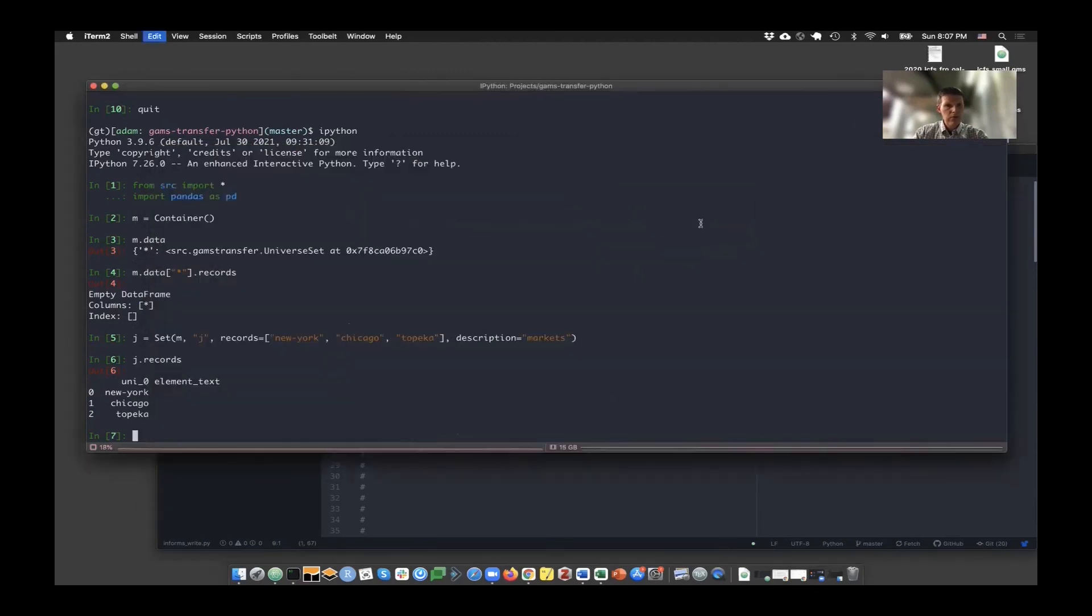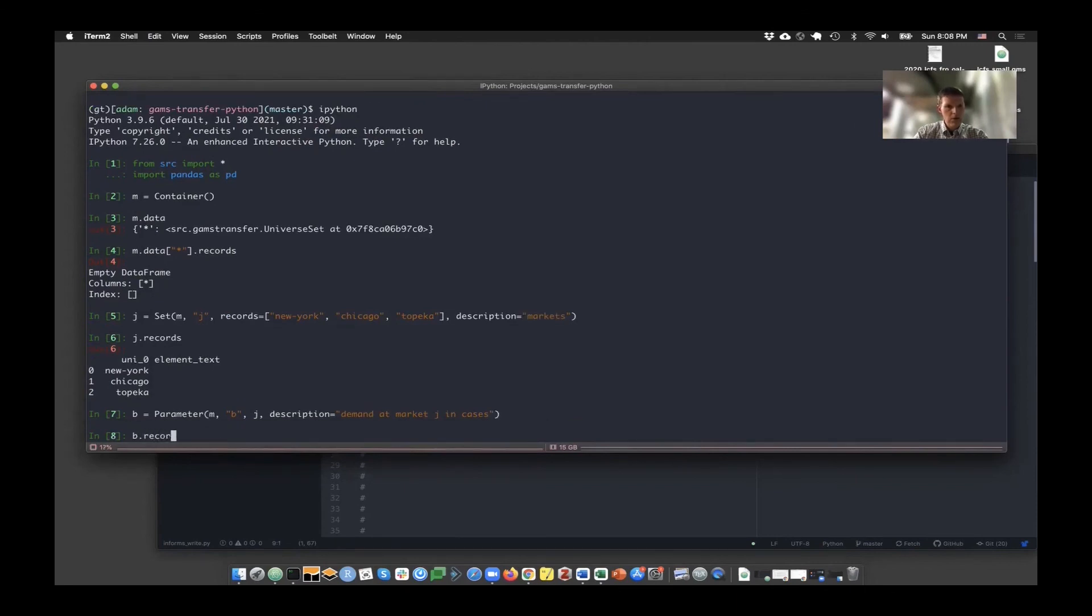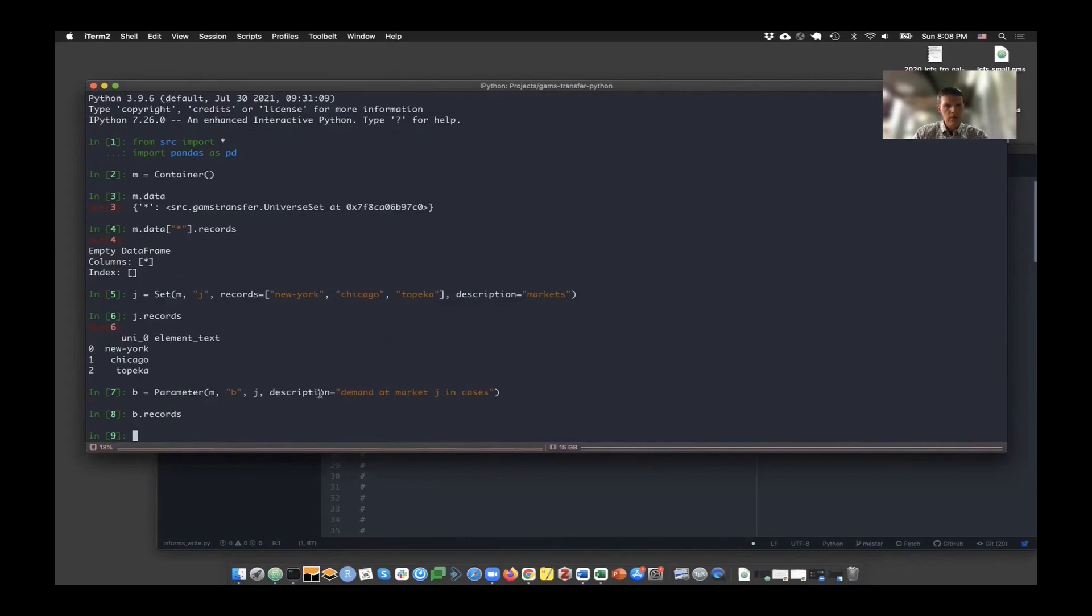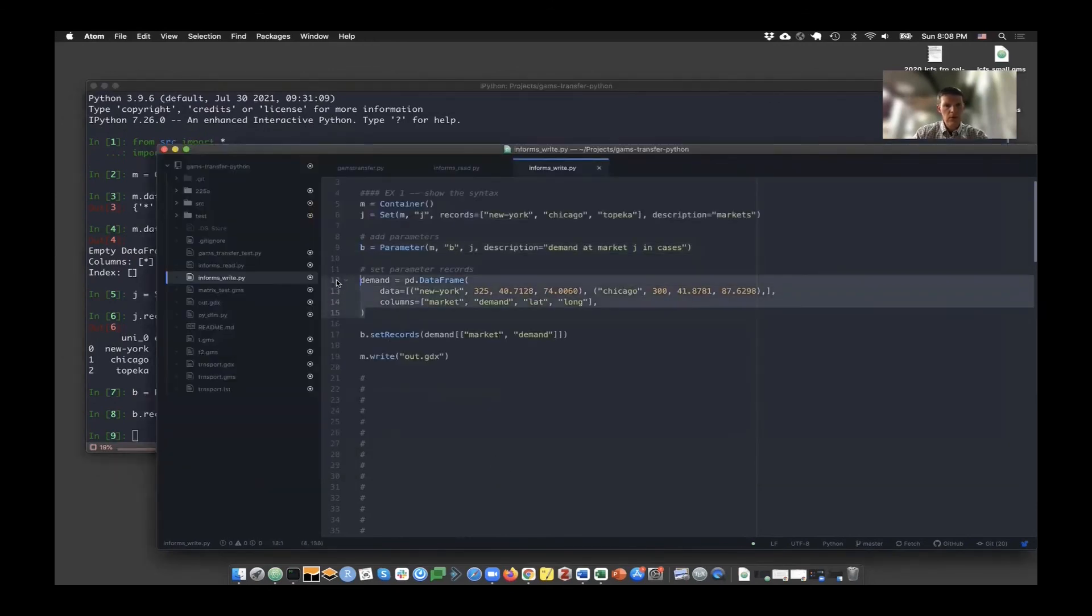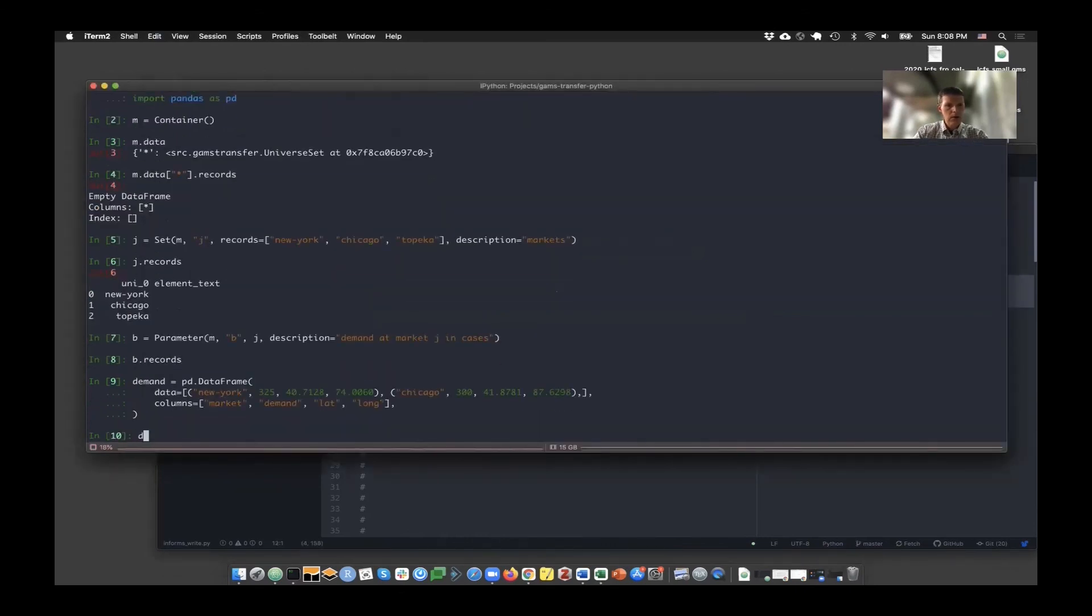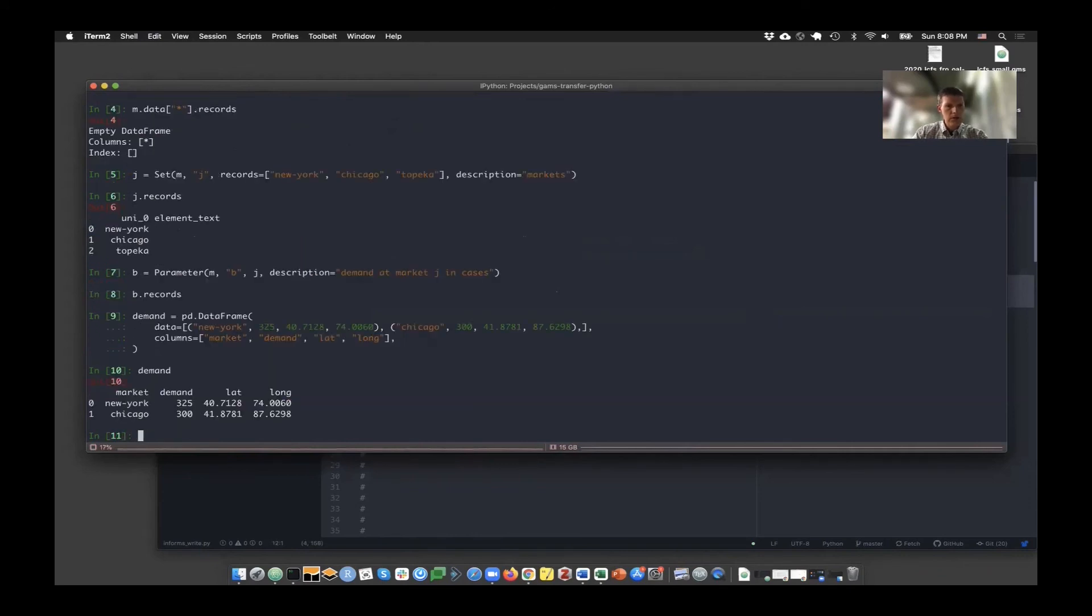What I'm going to do now is just, I'm not going to recreate the entire transport GDX file. I'm going to just create a parameter called B that doesn't have anything in it because I've left that argument out. Pretend for a moment that you've read in data from a CSV file using some pandas IO tools, and you've ended up with the market and demand information as well as some extra stuff. So you want to take these two columns, the market and the demand quantities here, and move it into the container. It's pretty easy to use the slicing features in pandas to do this and the set records functionality in GAMS transfer.